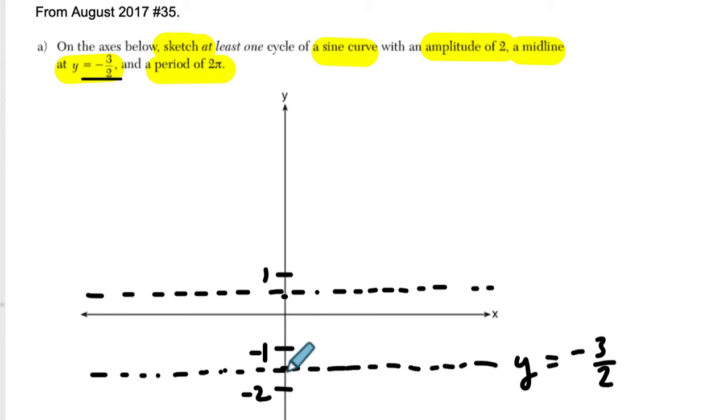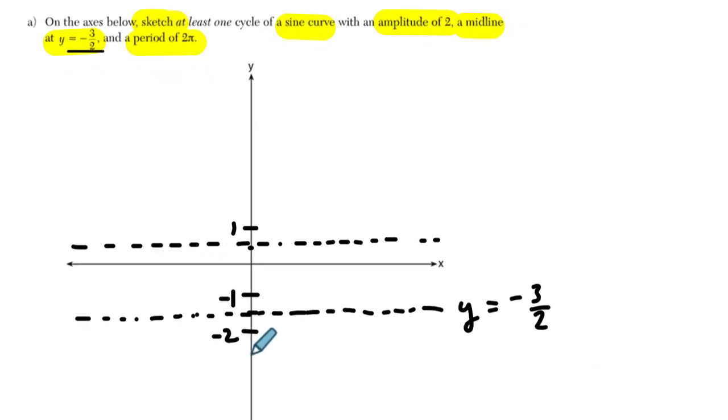And the lower boundary, that distance right there, is the amplitude. It's also 2 down from negative 1.5. So it's going to go down to negative 3.5. So it's 2 above and then 2 below. And the function is going to live between these two right here. That's at y equals negative 3.5. And here's y equals positive 0.5.